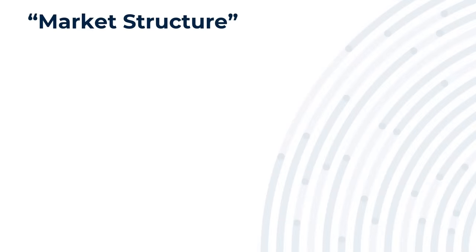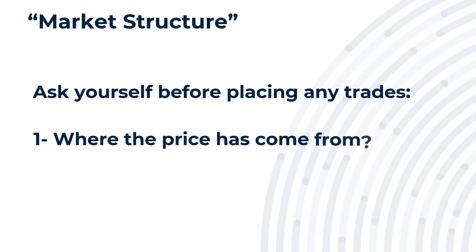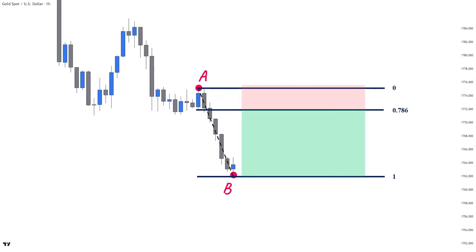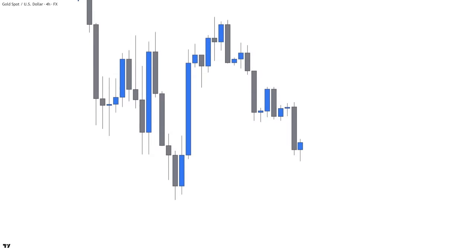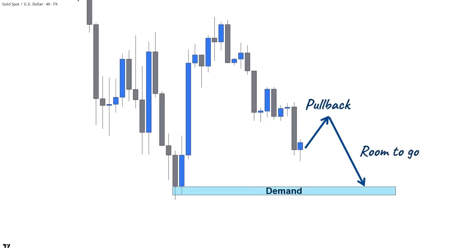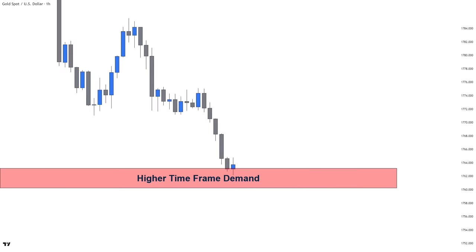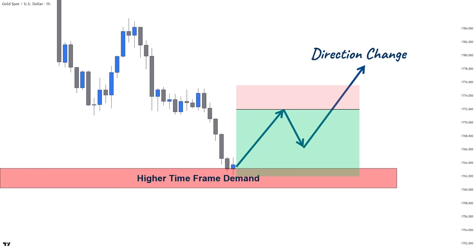The second factor to consider is the higher timeframe market structure. Before placing any trades, ask yourself where the price has come from and how much room it has to continue before reaching a higher-level demand or supply. For example, on gold's four-hour timeframe, we can see a higher timeframe demand area in front of the price with a lot of space before reaching it, so it makes sense to open short positions. However, if the price had already mitigated a higher timeframe demand level, we couldn't open a short trade without confirmation, because the market can easily change direction and ignore the lower timeframe supply areas.